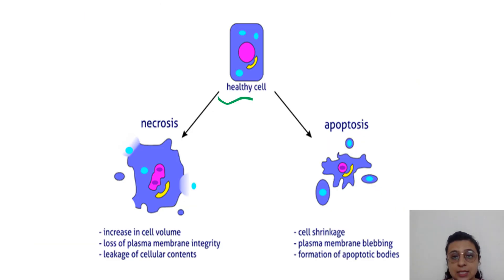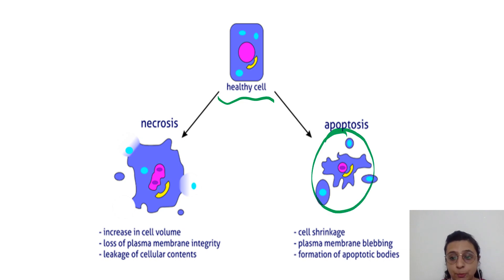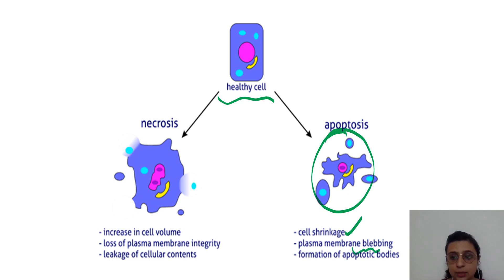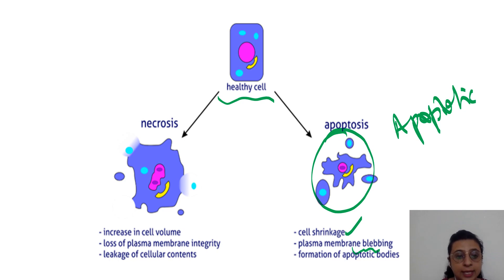Looking at the diagram, there will be apoptotic body formation and shrinkage of the cell, but membrane blebbing can be there. Apoptotic bodies you can very well remember.